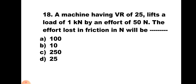Question number 18: A machine having VR of 25 lifts a load of 1 kilo Newton by an effort of 50 Newton. The effort lost in friction in Newton will be — A) 100, B) 10, C) 250, D) 25. The formula for effort lost in friction is P − W/VR. Substituting the values gives 10 Newton. Hence the correct answer is B) 10.